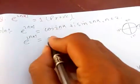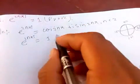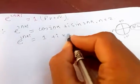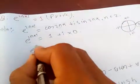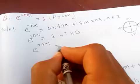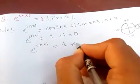So this is just 1, because cos 0 degrees is 1 and sine is 0. So e to the 2nπi equals 1.